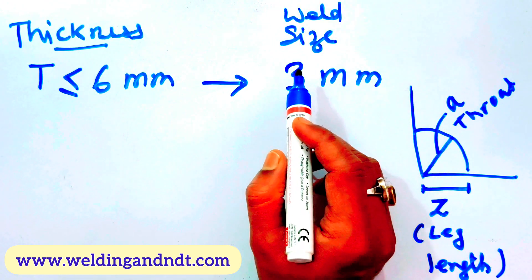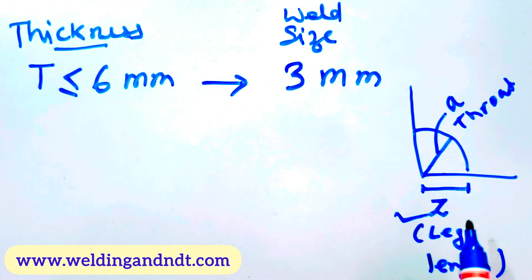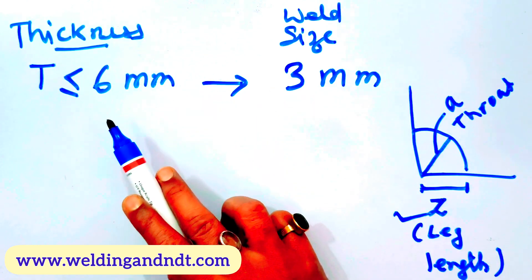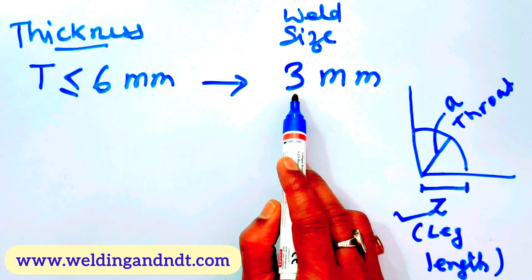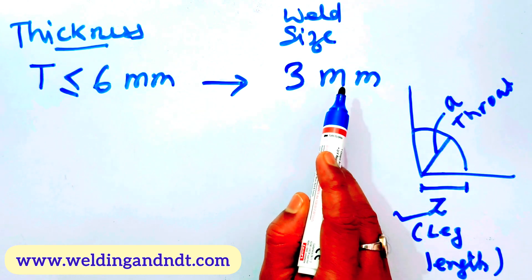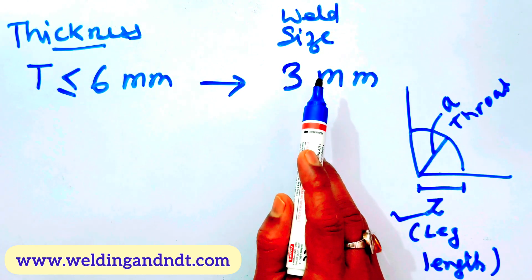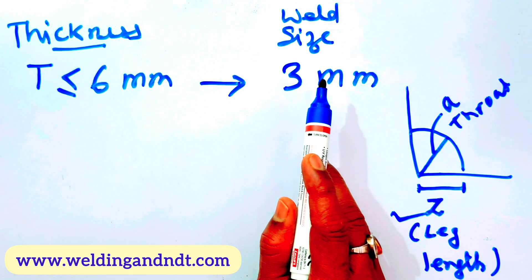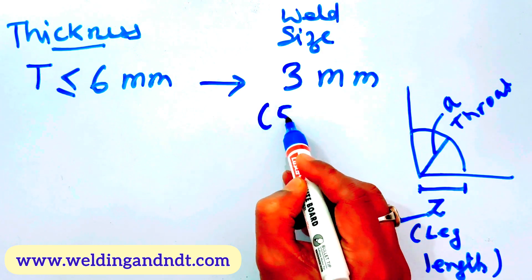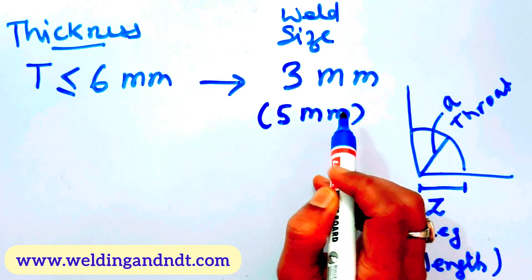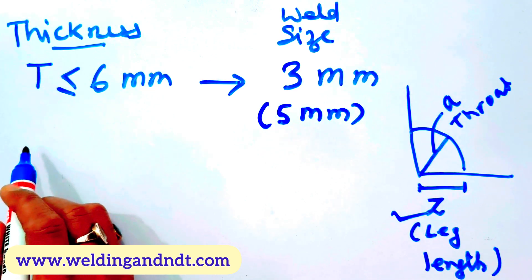The weld size mentioned in AWS D1.1 is the leg length. So if the base metal thickness is less than or equal to 6 mm, the leg length will be 3 mm. There is one exception: if the structure is subjected to cyclic loading, the leg length will be 5 mm instead.